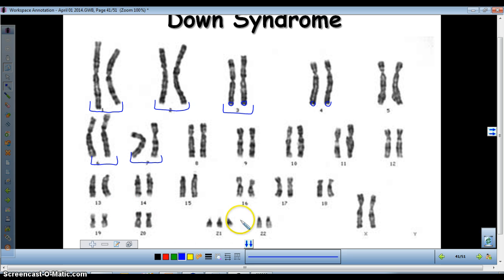But wait. What do you see here? Three copies of chromosome 21. Trisomy 21 is Down syndrome. It's a genic disorder.